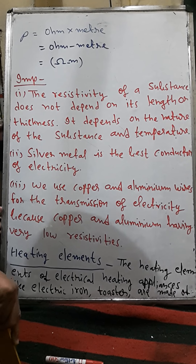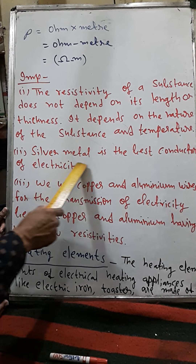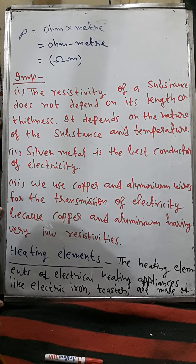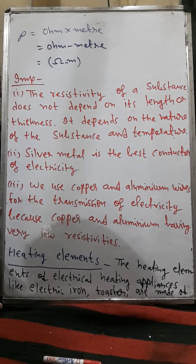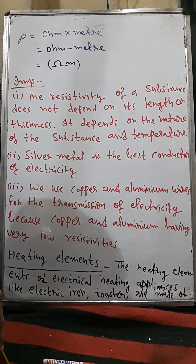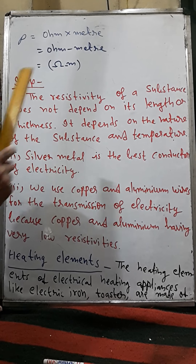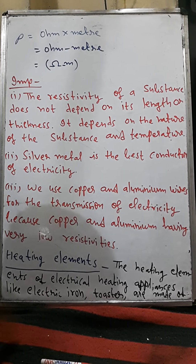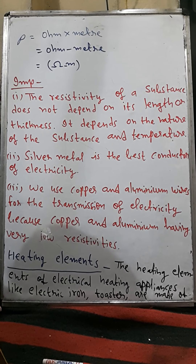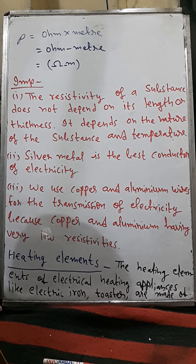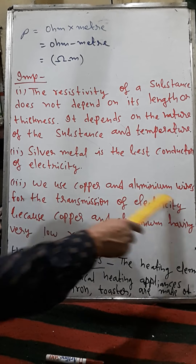Number two: silver metal is the best conductor of electricity. Among all metals that are conductors, silver is the best — no other conductor is better than silver (chandi). Silver has the lowest resistivity among all metals.